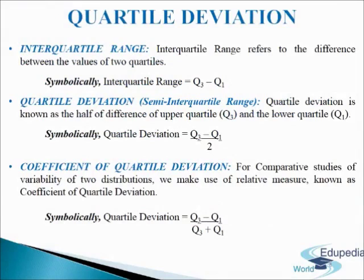First is interquartile range. Range is a crude measure because it takes into account only two extreme values, that is the largest and the smallest. The effect of extreme values on range can be avoided if we use the measure of interquartile range. Interquartile range refers to the difference between the values of two quartiles. Symbolically, it is written as: interquartile range equals Q3 minus Q1, where Q3 is the upper quartile and Q1 is the lower quartile.